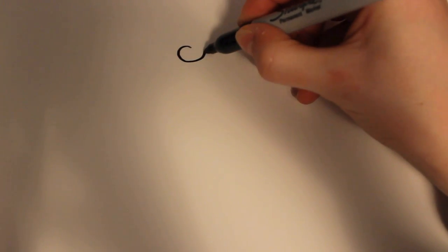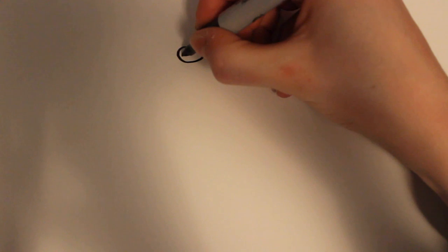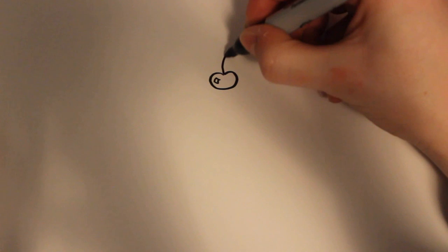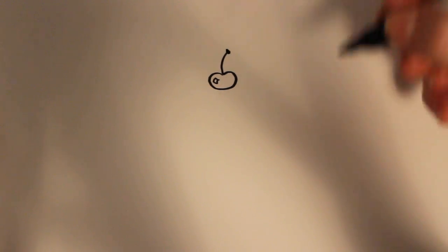First I start off by drawing right in the center the cherry, which is just going to be a shape kind of like a kidney bean with a shine mark on the side. And then one stem and then a little black dot at the top.